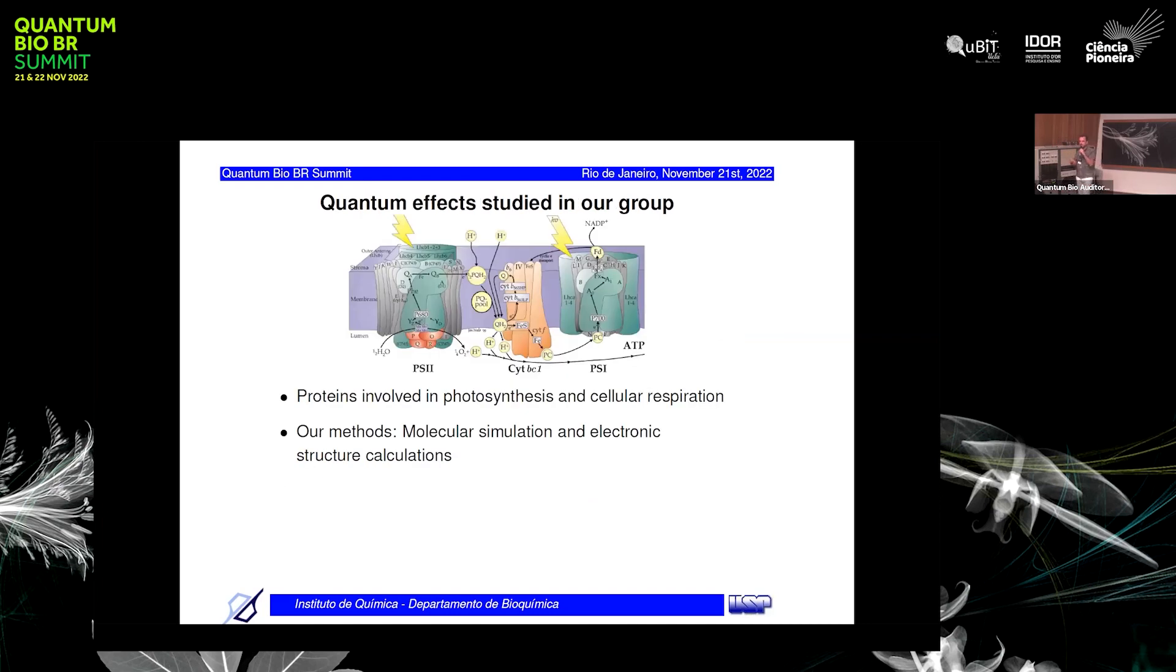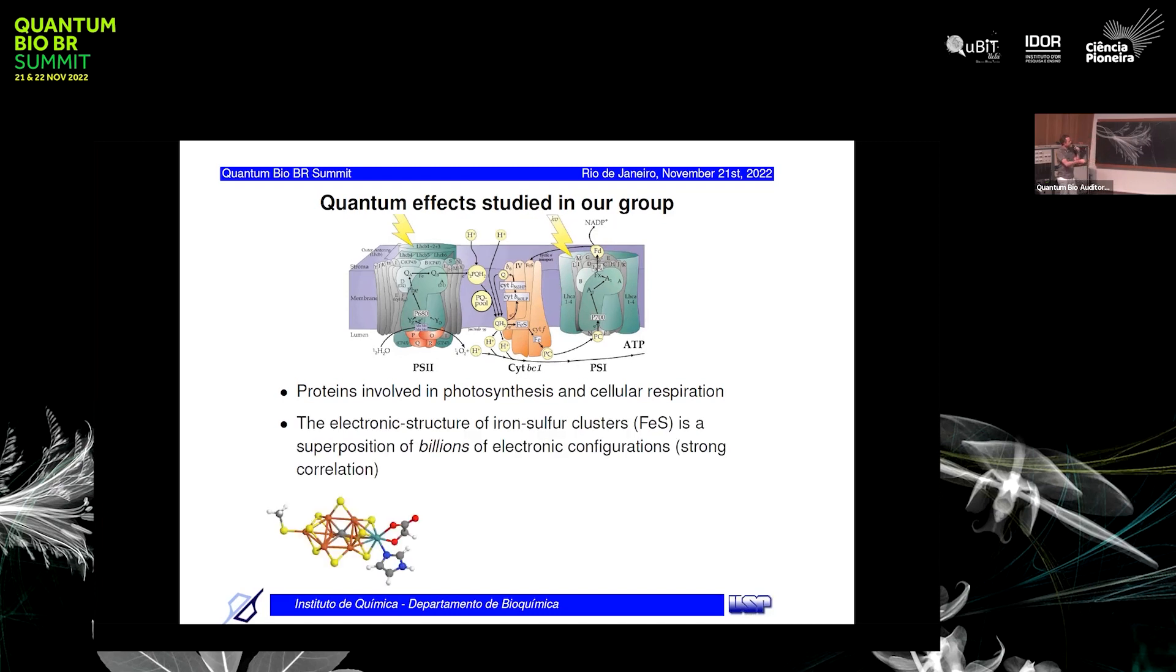In our group, we have been studying quantum effects in biological systems for a long time. We've been looking at photosynthesis and cellular respiration. This is a scheme showing the two photosynthetic systems found in chloroplasts in all plants. For instance, this cytochrome bc1 protein here is equipped with iron-sulfur clusters, as well as the ferredoxin. They are equipped with iron-sulfur clusters, which are responsible for electron transfer.